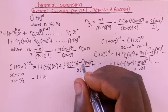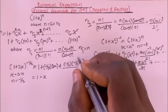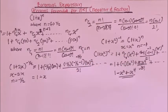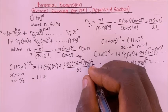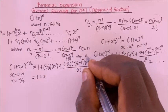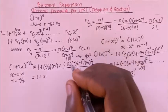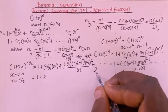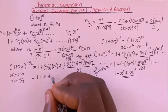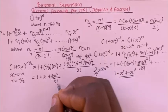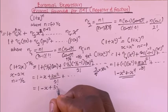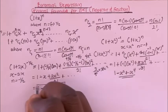Simplifying: −1/2 times 2x cancels to give −x. Then (−1/2 − 1) = −3/2, so (−1/2)(−3/2) = 3/4. Times (2x)² = 4x², giving 3/4 times 4x² divided by 2! = 3x² divided by 2. So the expansion is 1 − x + 3x²/2.